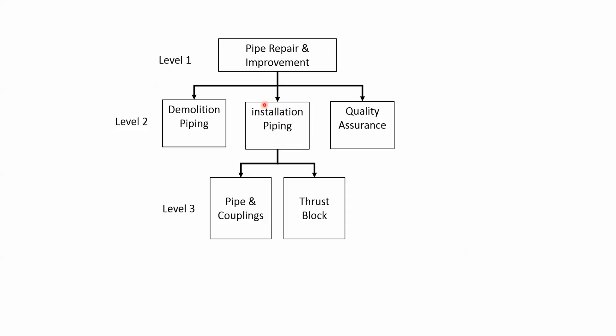Installation Piping breaks further down into Pipe and Couplings and Thrust Block. Pipe and Couplings would include the Installation of Piping, Installation Adapter Couplings, and also Installation of Pipe Insulation.